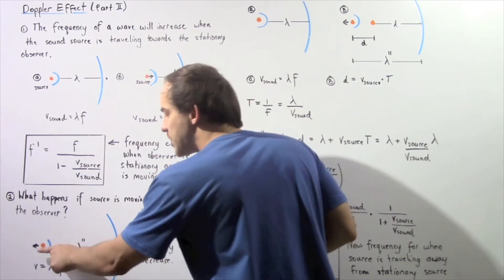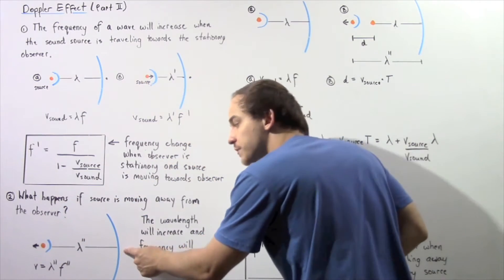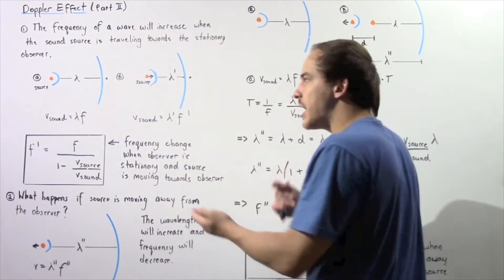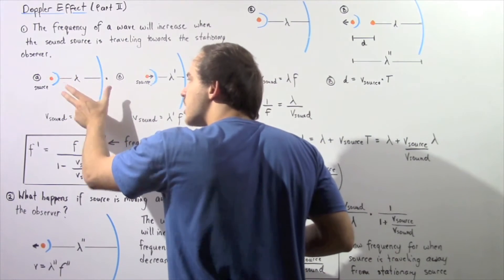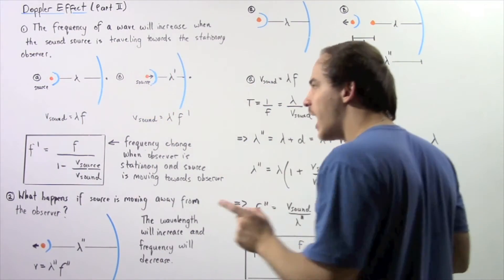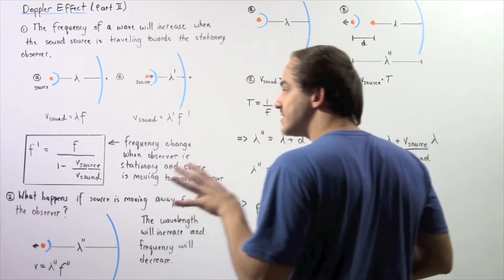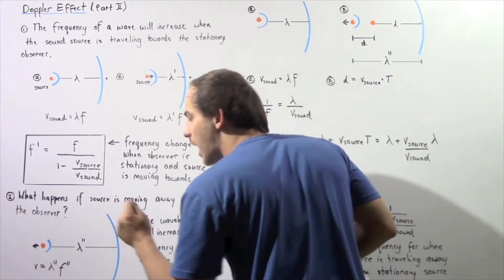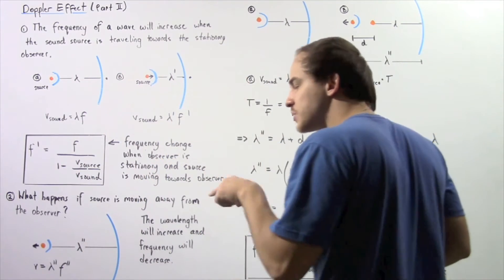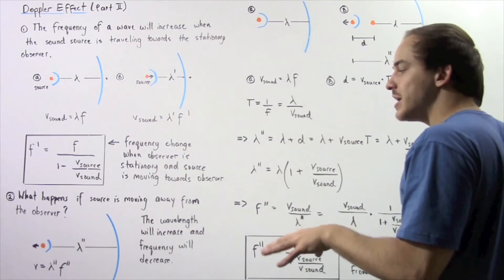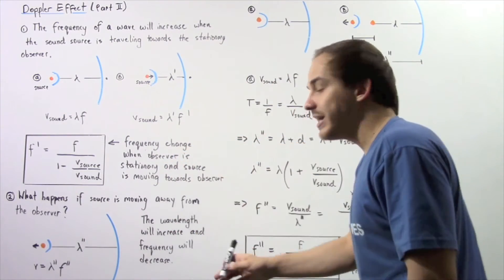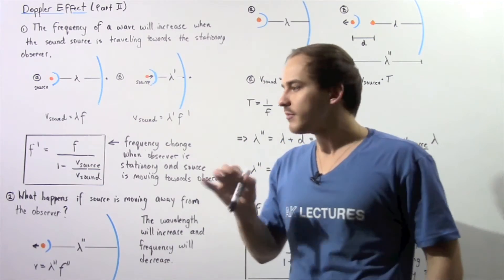Let's suppose we have our source moving away from the observer. In this case, the wavelength lambda 2 prime is greater than the original wavelength lambda from case A where the source was stationary. And because the speed of sound must remain the same, as lambda 2 prime increases, the frequency F 2 prime must decrease.